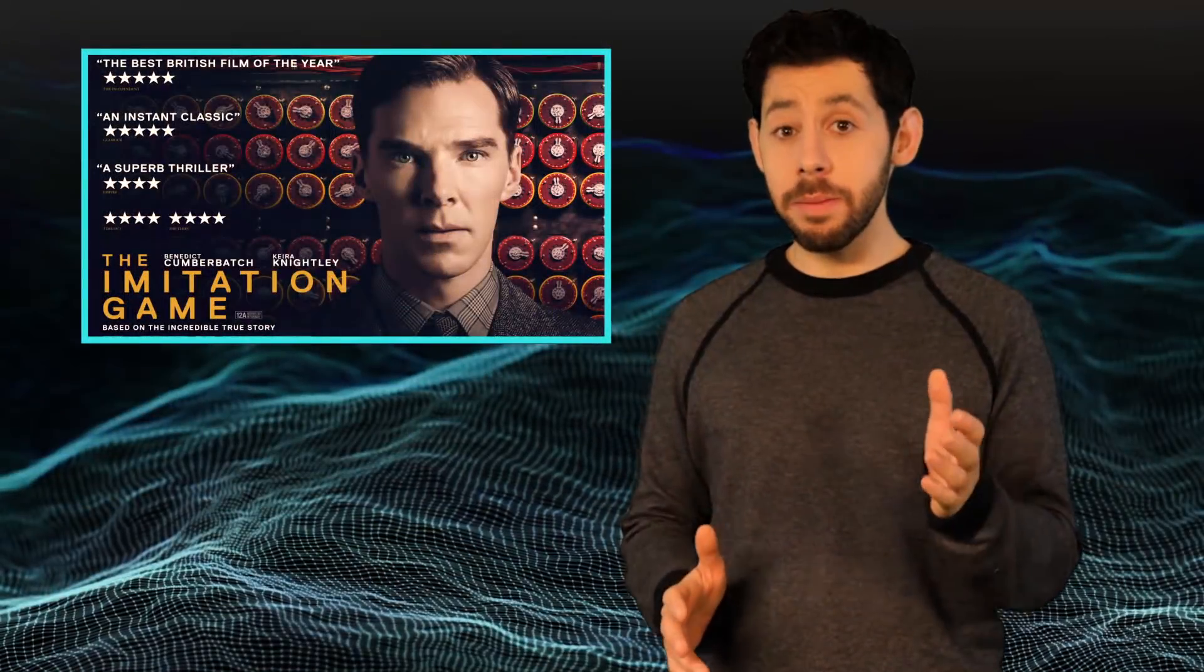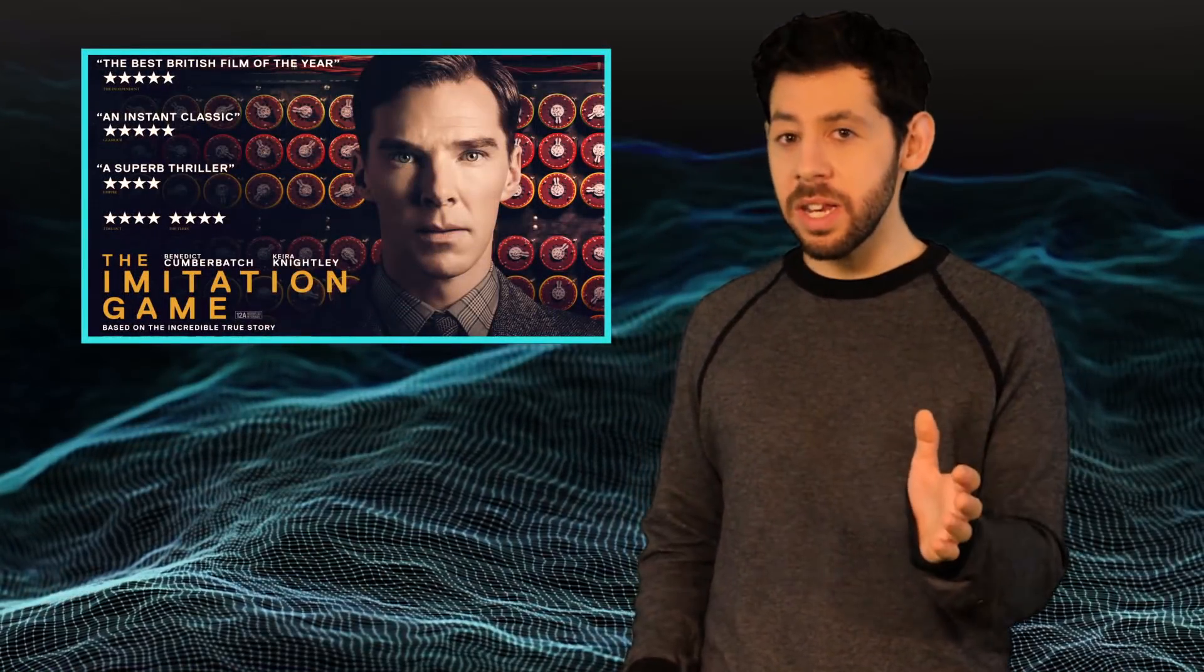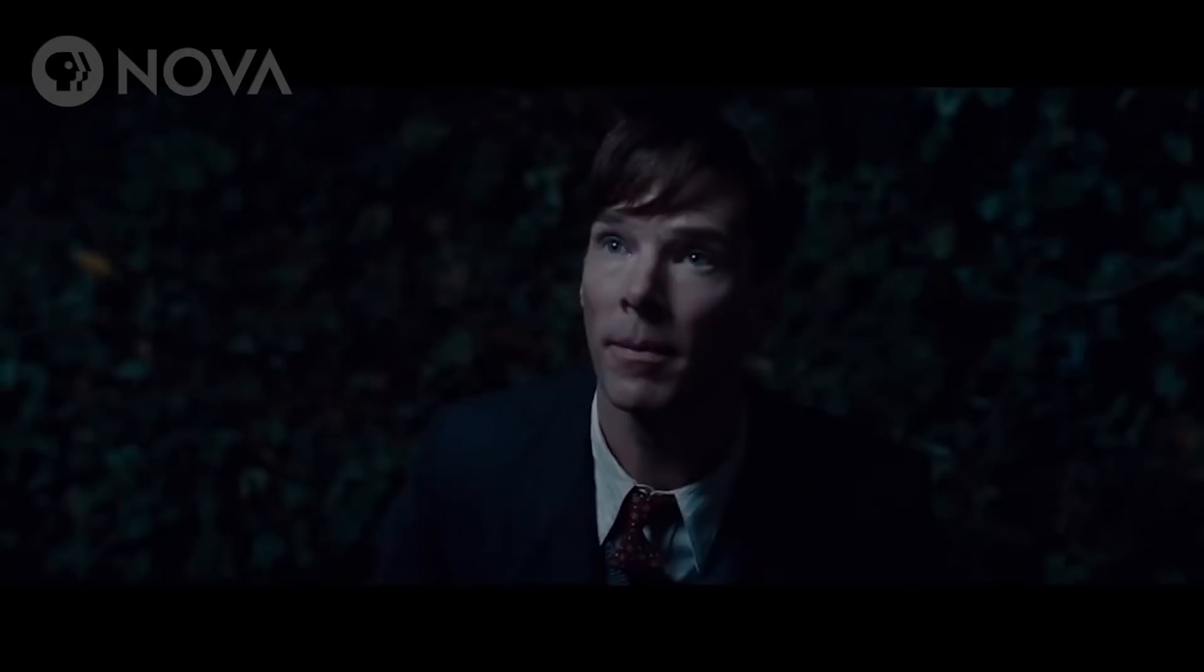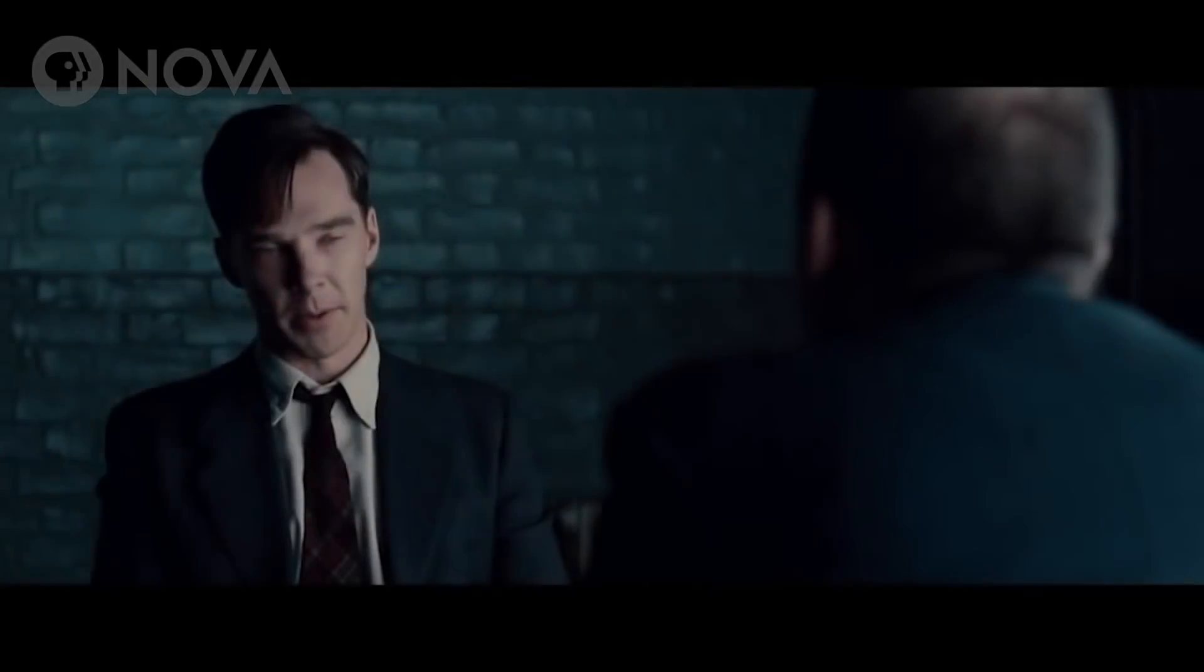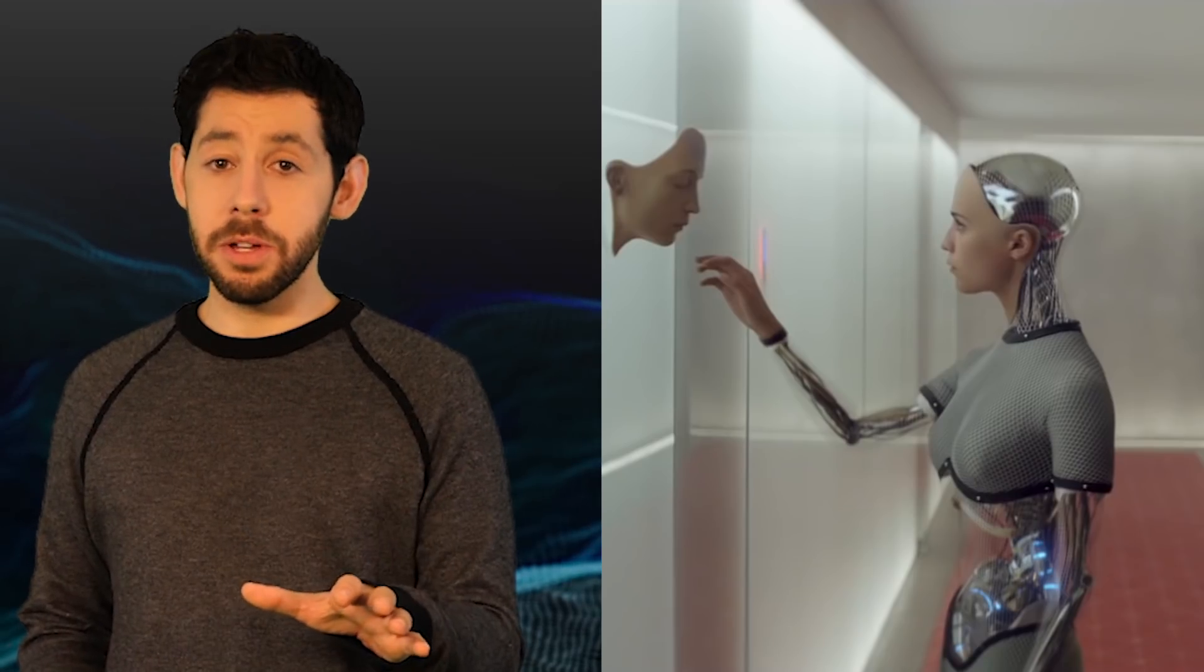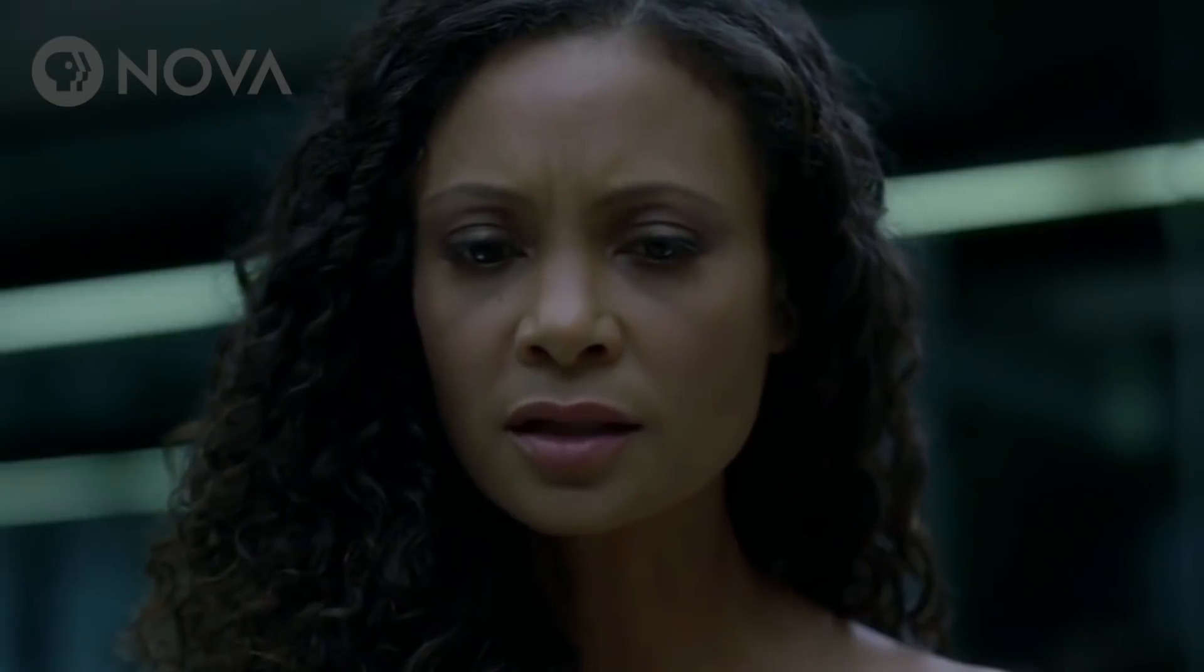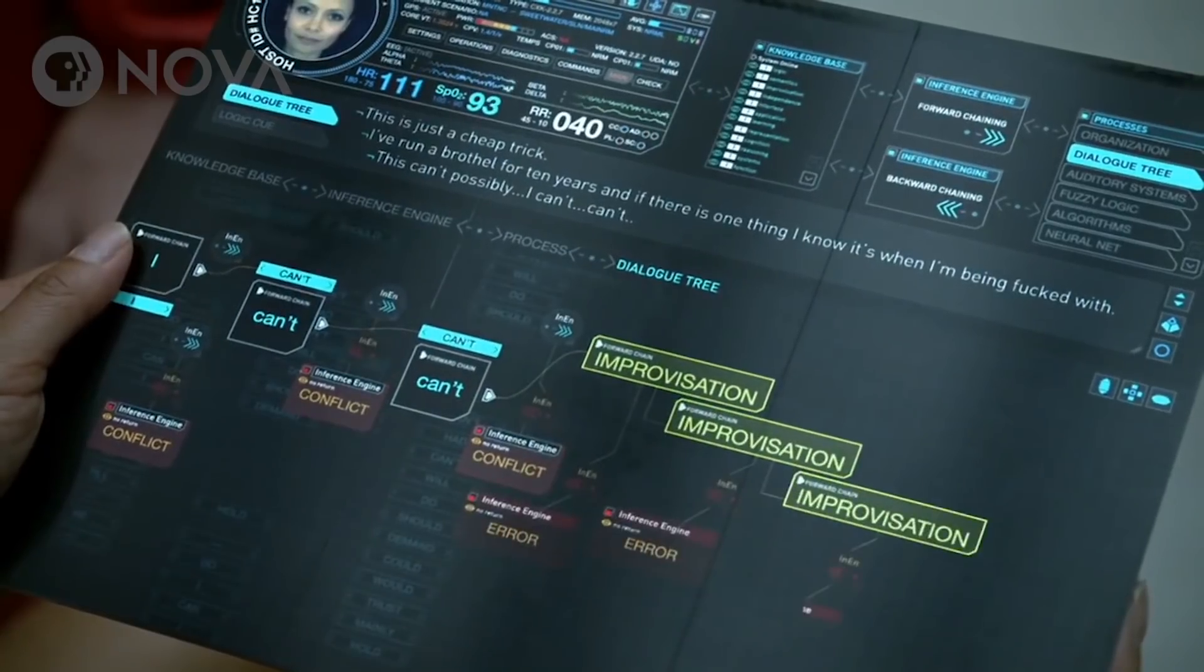Alan Turing's imitation game considered a machine that can convince you it's a person. Could machines ever think as human beings do? Most people say no. So what's the difference between the experience of a thinking machine and us? A functionalist would say that if something can be programmed to act like a conscious person, then it's conscious. For example, by installing the right program. IIT refutes that.